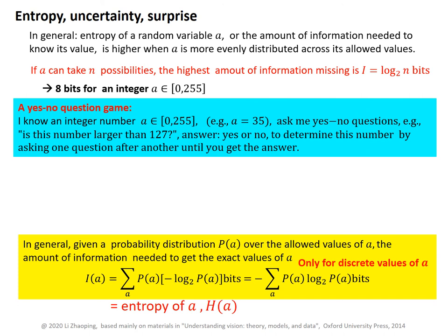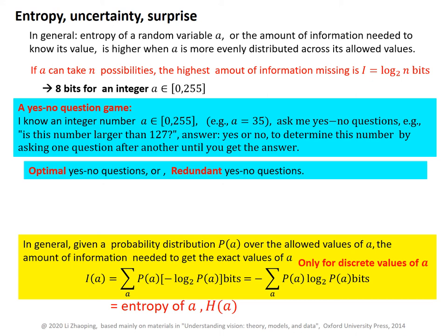Let's digest by playing a yes-no game. I know an integer value A within 0 and 255 — for example, A is equal to 35 — but you do not know it. You can ask me yes-no questions to try to get to its exact value. For example, you can ask: is this number larger than 300? I would answer no. If you ask: is this number smaller than 250? The answer is yes. Or you can ask: is it an even number? The answer is no, etc. Your aim is to ask optimal yes-no questions so that you need as few questions as possible to get the exact answer.